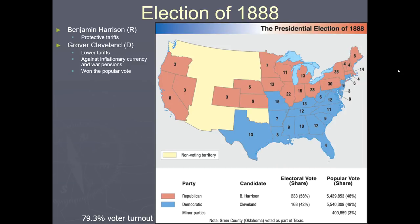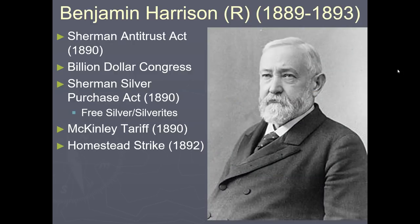This led to the election of Benjamin Harrison. Harrison presided over what became known as the Billion Dollar Congress, when the congressional budget hit $1 billion for the first time. Speaker of the House Thomas Reed solved the problem of reaching a quorum by counting Democrats who were present but didn't answer the roll call. After three days of chaos, he prevailed, opening the 51st Congress. This also led to the emergence of the Populist Party during 1892.